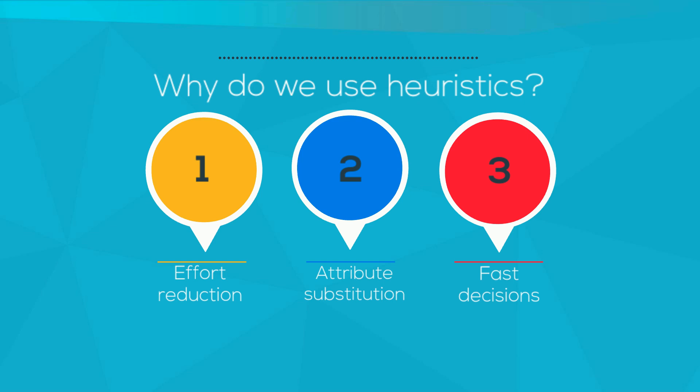Second, attribute substitution. And third, fast decisions. Some research believes that heuristics are more accurate than they are biased.